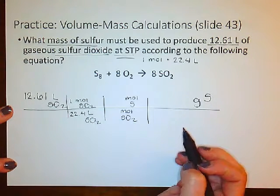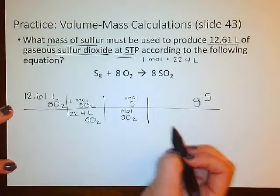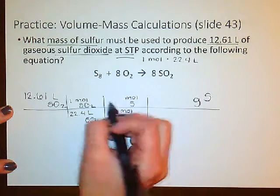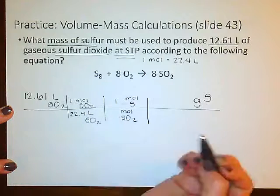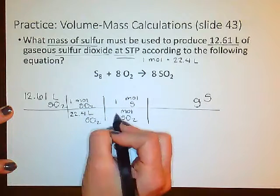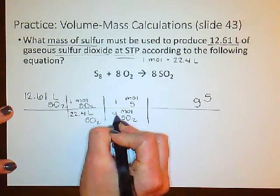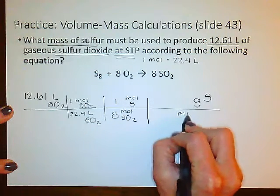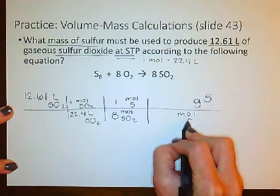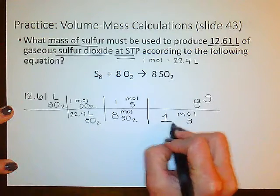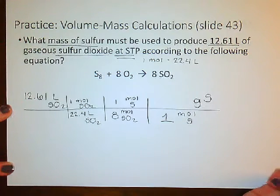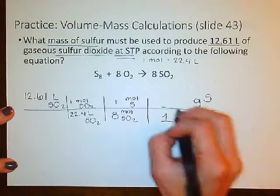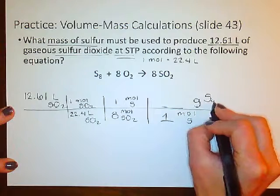That should look familiar — now we have a mole-to-mole ratio. We have the equation already balanced, and I see a coefficient of 8 in front of the sulfur dioxide. The last step is to drop down moles of sulfur. So we've got 1 mole of sulfur — but how much does 1 mole of sulfur weigh?